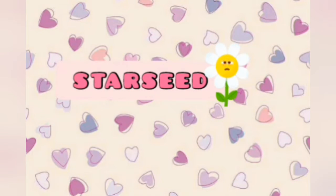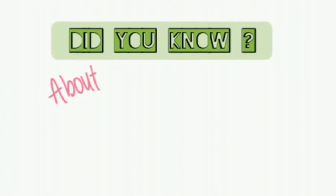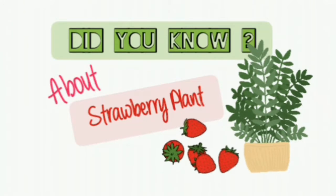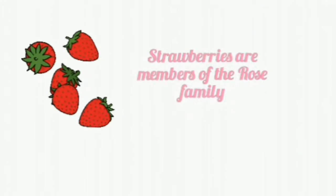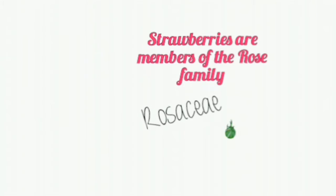Welcome to my channel Starseed Flower. In this video I will talk about the strawberry plant, the growth of the strawberry plant, and what kind of plant it is. The strawberry plant is a perennial plant. It belongs to a rose family called Rosaceae — that's the family name — and the genus name is Fragaria. The botanical name is Fragaria x ananassa.